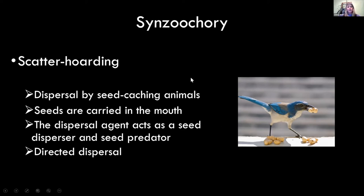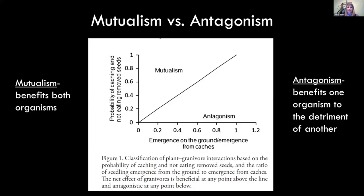A lot of these seed dispersal agents in scatter hoarding systems also act as seed predators, so there's a fine line between being a disperser versus a seed predator. This relationship actually exists on a continuum between mutualism on one side and antagonism on the other — it's never 100% beneficial or 100% antagonistic. A mutualism benefits both organisms; in antagonism, one organism benefits over the other.